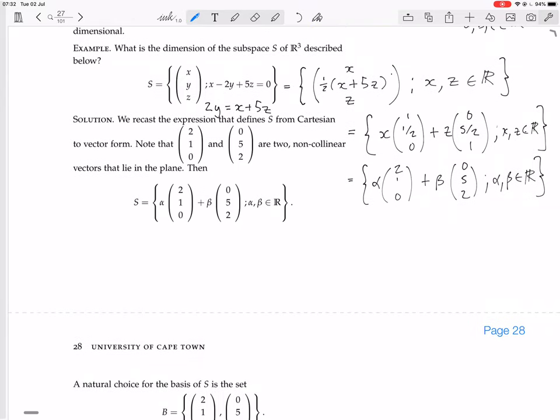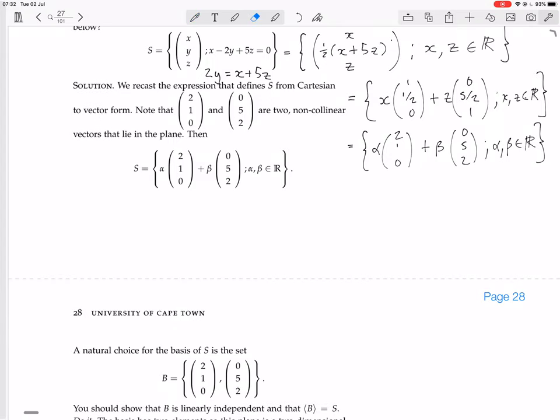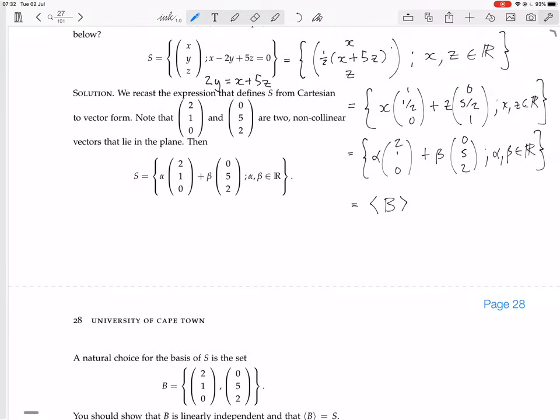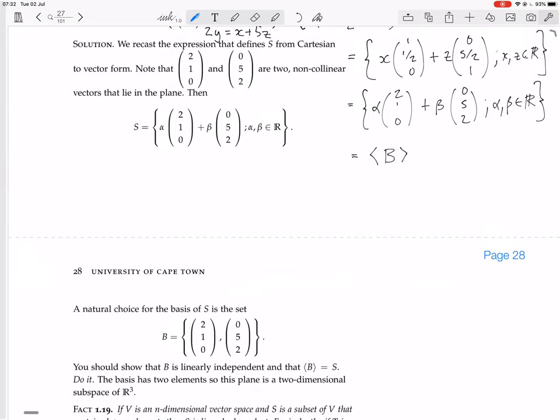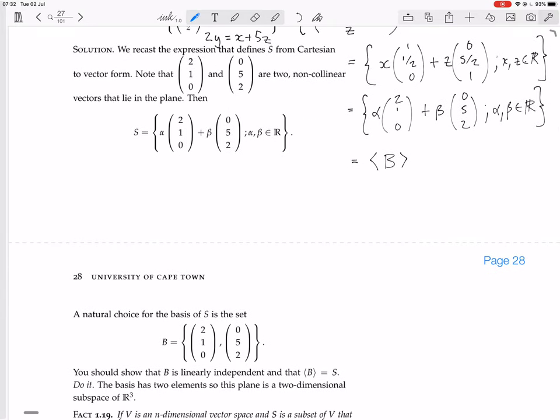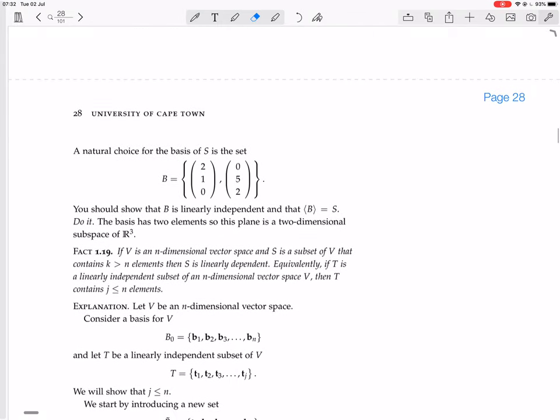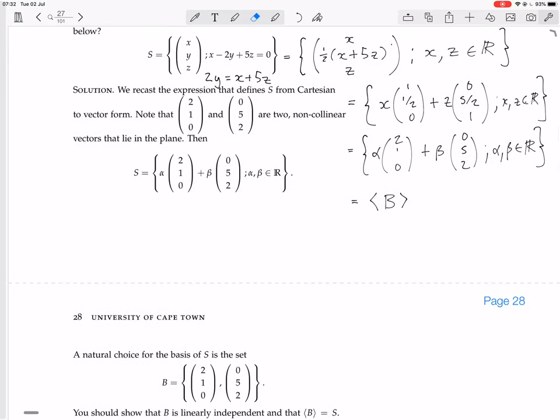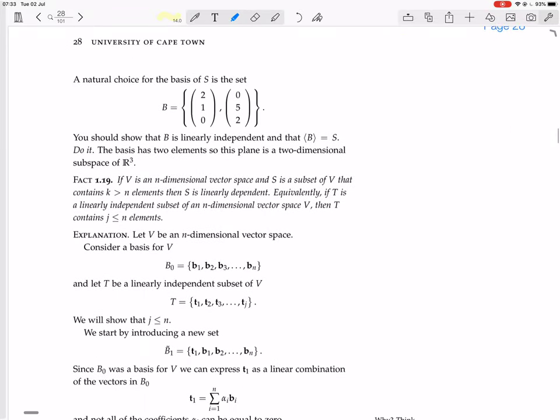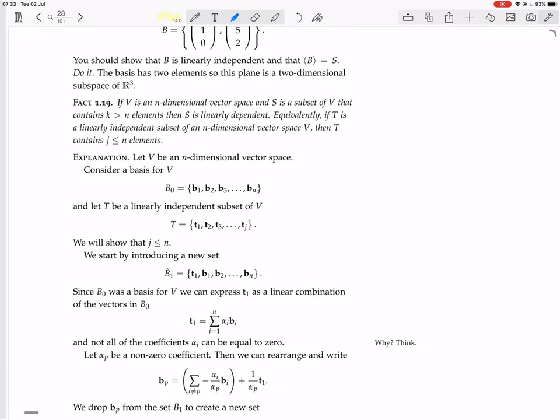It's the set generated by those two basis vectors. We already showed that it's linearly independent by noting that those two vectors are not scalar multiples of each other, so now we know that a basis for this plane is these two vectors, and so the plane is two dimensional, a two-dimensional subspace of R³. How do I know it's a subspace? Of course it's a subspace because anything like this, any set generated by some vectors is a subspace because it's closed under vector addition and scalar multiplication because it is just a set of linear combinations. Should I leave it there for now? Yes, I'll finish this section in the next video.